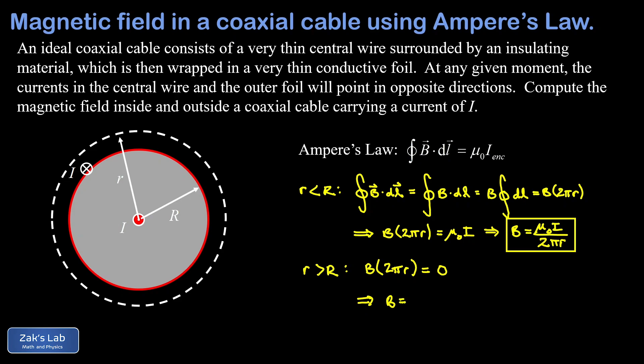When we divide by 2πr, we find that the magnetic field outside this coaxial cable vanishes. This video is part of a series on Ampere's Law and its applications. Thanks for watching.